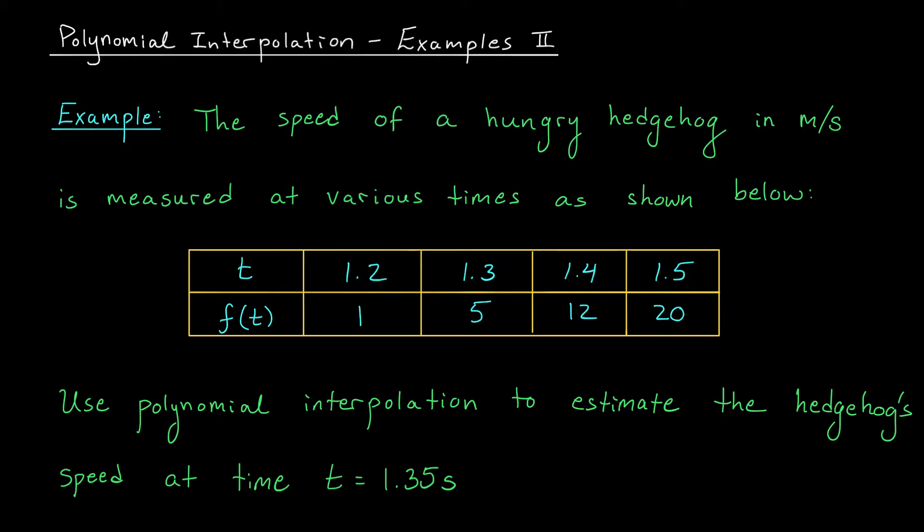Our data points are, you know, 1.2, 1.3, 1.4, 1.5. They don't start at 0, and they're not spaced out by one unit each. So what do we do?